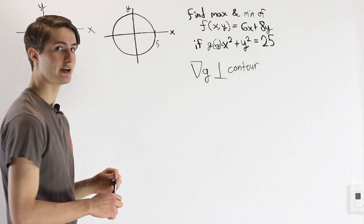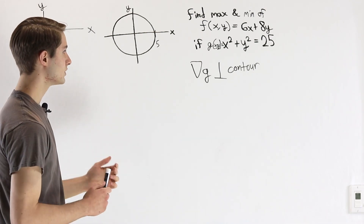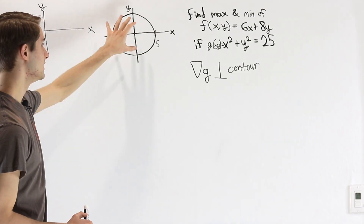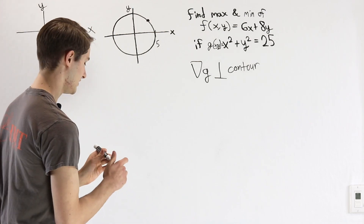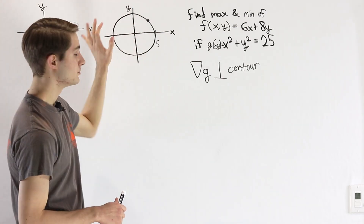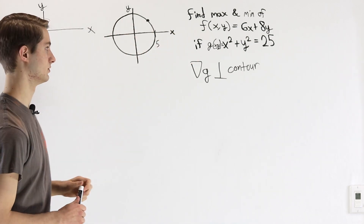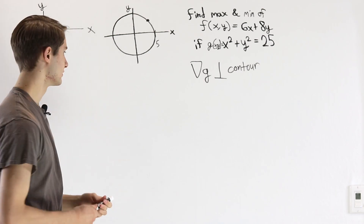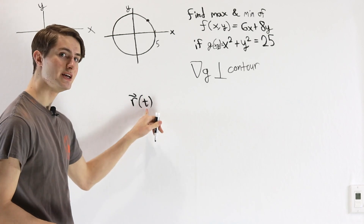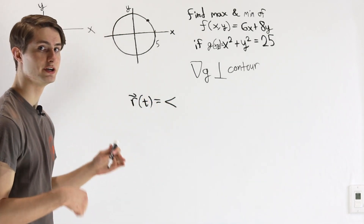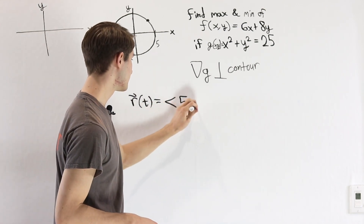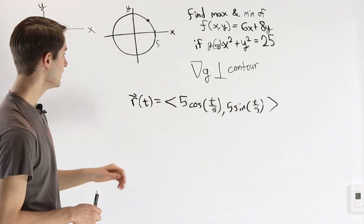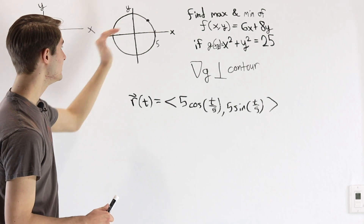Now we want to look at where our function f comes in, and in order to do that we're going to find some information about the gradient of f and how it relates to that contour. Let's say that we have a maximum or minimum value in this bounded region. One of the things we can do is take this two-dimensional situation and bring it back to a one-dimensional one using something called a space curve. A space curve, which we'll denote r of t, is a function that takes in one variable but outputs a vector in multiple dimensions. In this case, we could use the vector 5 cosine(t/5), 5 sine(t/5), and for any given point on this circle we can find a value of t that gives us that result.